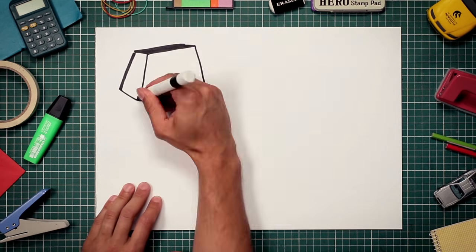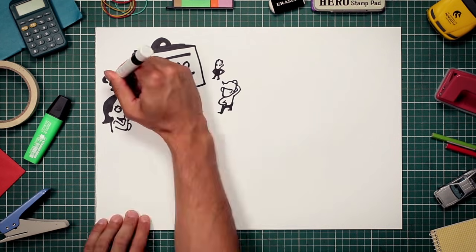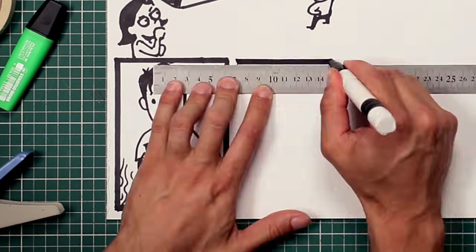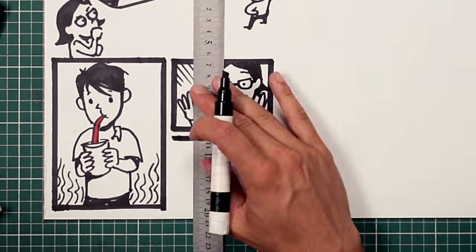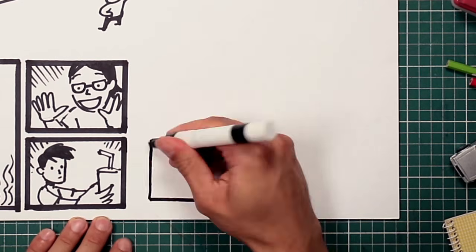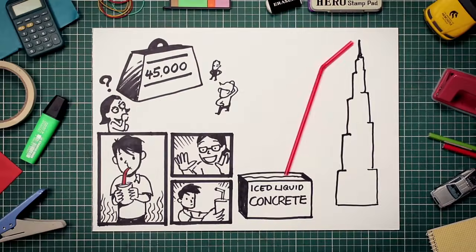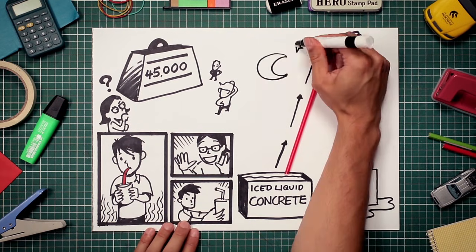One of the difficulties of building the Burj was trying to figure out how to set 45,000 cubic metres of reinforced concrete in such extreme weather. The solution? A clever method of pumping iced, liquid concrete into the 55,000 tonne steel frame during the night.